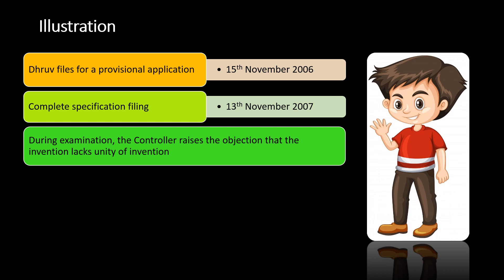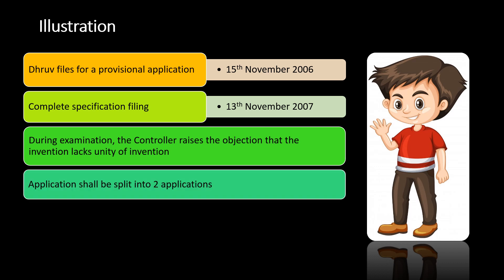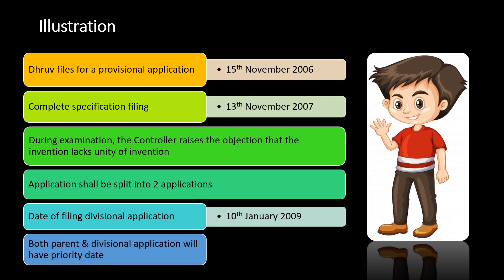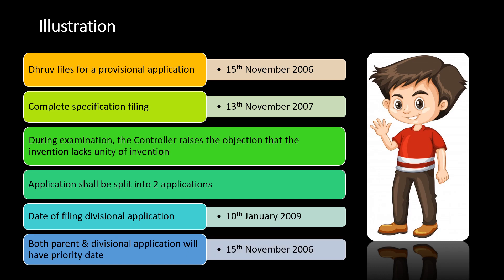During examination, the controller raises the objection that the invention lacks unity of invention. Now what he has to do is split his patent application into two applications. The date of filing his divisional application is suppose 10th January 2009. In this case, both his parent and divisional application will have the same date of priority — that is, his date of filing the provisional application, which was 15th November 2006.